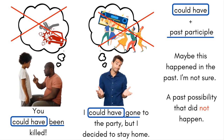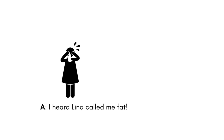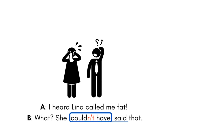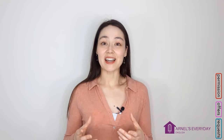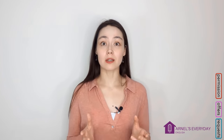'Could have' plus past participle has two meanings. One: something that maybe happened in the past. Two: something that didn't happen but was a possibility. In the negative: 'I heard Lena called me fat.' 'What? She couldn't have said that — Lena is the nicest person I know.' If you want to know more about past modal verbs, I have a video which covers all of them — I'll put the link somewhere around here.